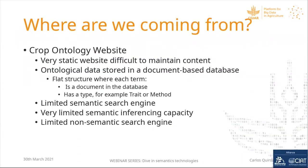Where are we coming from? The crop ontology website was a very static website, difficult to maintain content. The ontological data was stored in a document-based database — a flat structure where each term is a document and may have a type, for example, a trait or a method. There was very little semantic inferring capacity and also a limited non-semantic search engine.